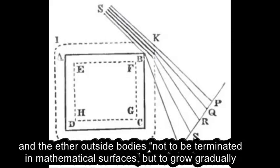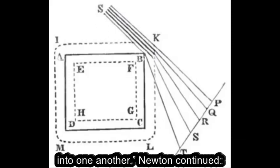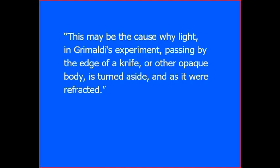He supposed the ether within bodies, and the ether outside bodies, not to be terminated in mathematical surfaces, but to grow gradually into one another. Newton continued, this may be the cause why light, in Grimaldi's experiment, passing by the edge of a knife,